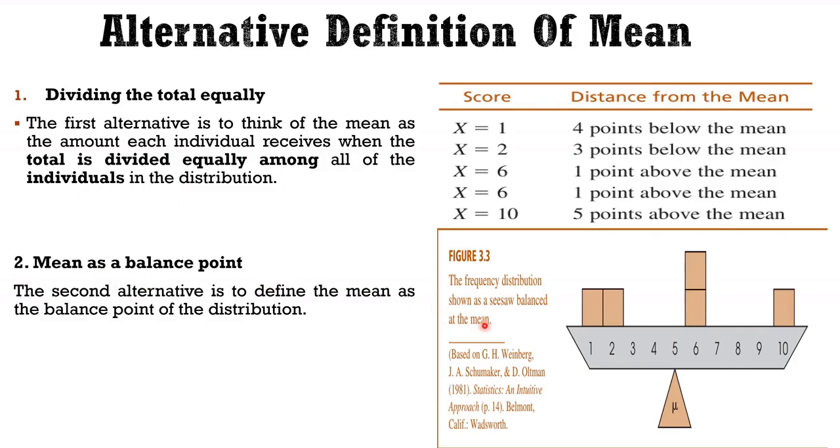The second is mean as a balancing point. In this figure 3.3, we can see the frequency distribution shown as a seesaw balanced at the mean. Frequencies are distributed from 1 to 10, the mean is 5. So mean acts as a balancing point. If we want to know the location of number 1 in this frequency distribution, we will say it is 4 points below the mean.